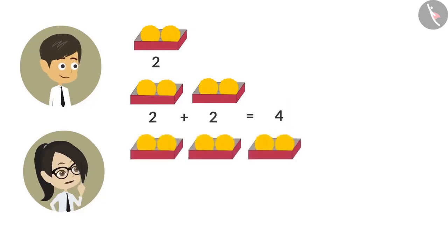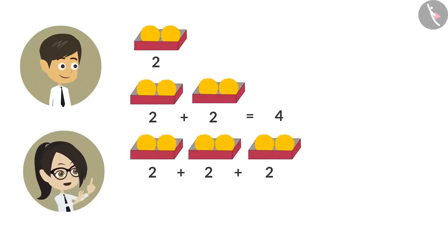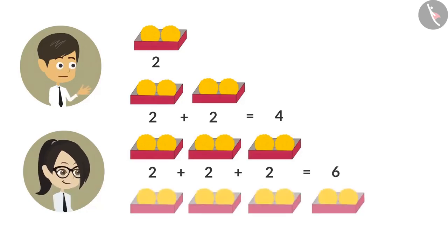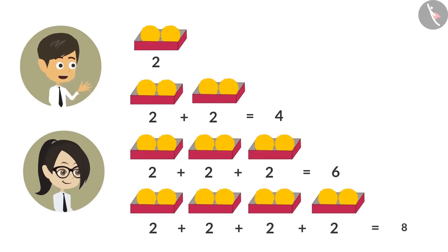To know how many ladoos are there in three boxes, we have to add two, three times. After adding two three times, the answer we get is six. To know the number of ladoos in four boxes, we have to add two, four times. After adding two four times, the answer is eight.